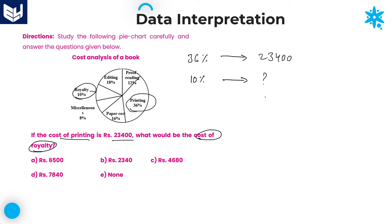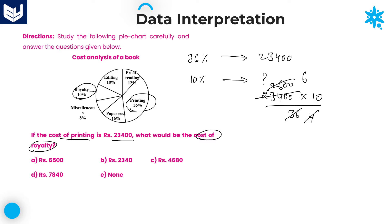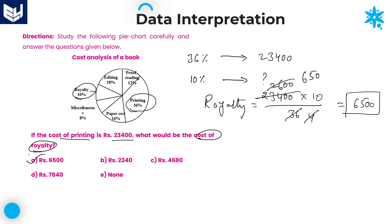You can do the cross multiplication: 23,400 into 10 divided by 36. Cancel with 9 table: 9 goes into 36 four times, and 9 into 18 gives 2. Cancel with 4 table: gives 6,500. The cost on royalty is 6,500 rupees. Option A is the right answer.